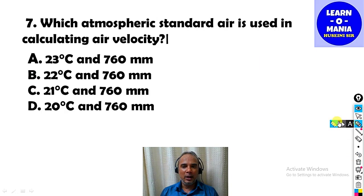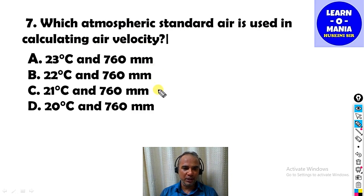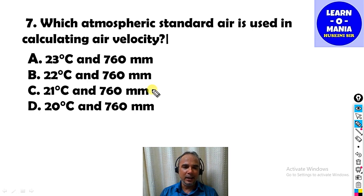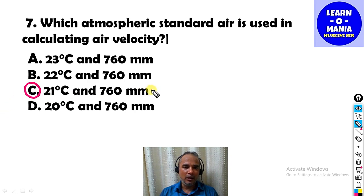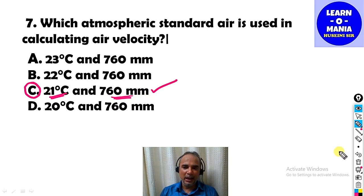Our next MCQ: Which atmospheric standard is used in calculating air velocity? To find air velocity, which standard is used? Option C is the right answer — we use this standard: temperature 21 degree Celsius and pressure 760 mm of mercury.